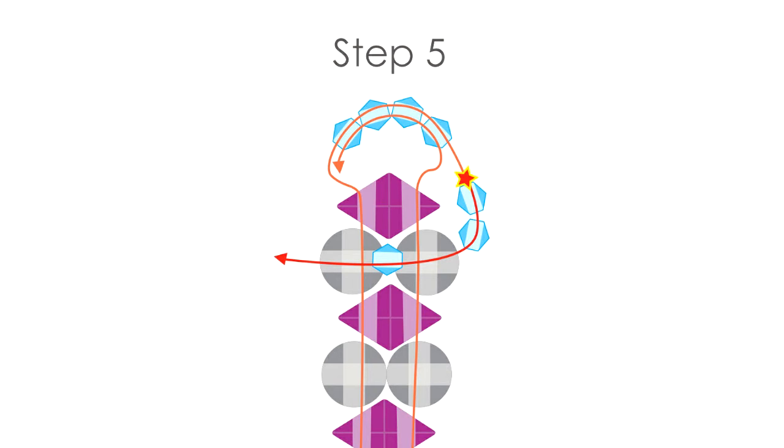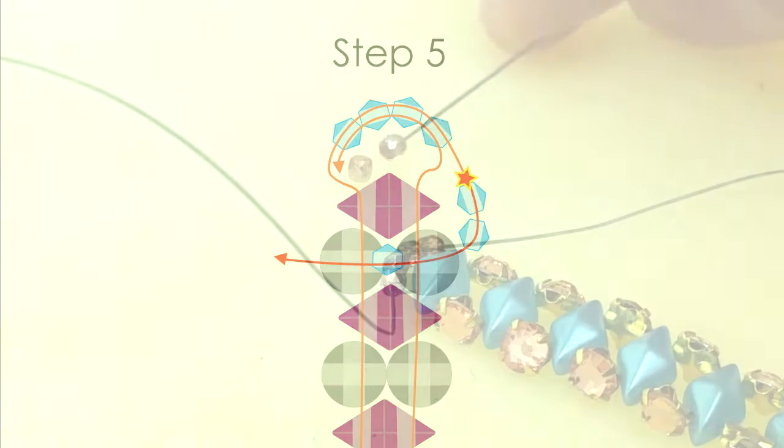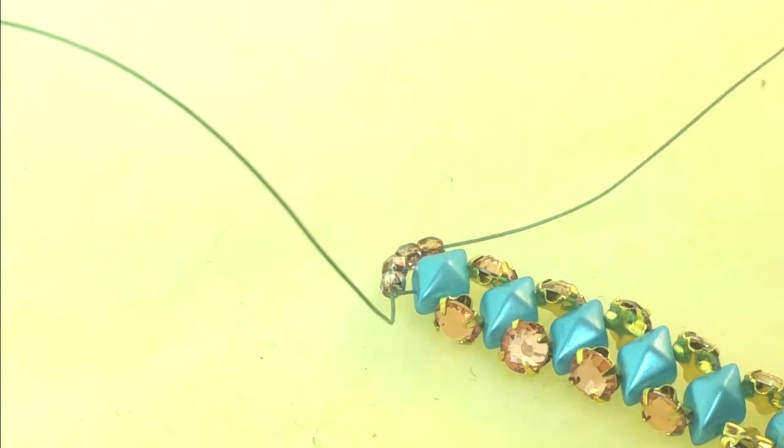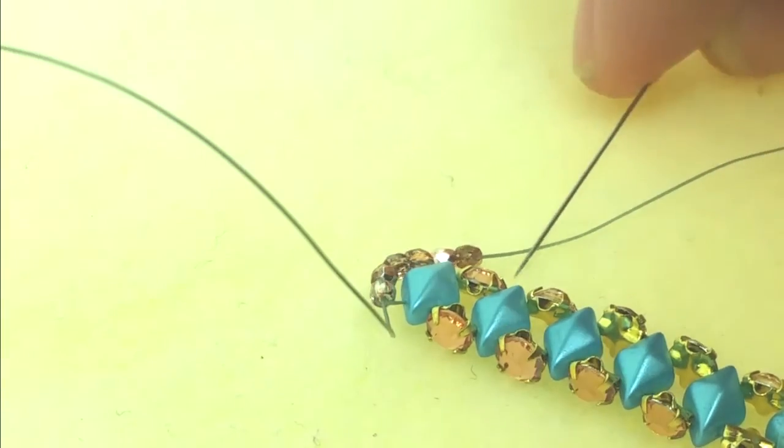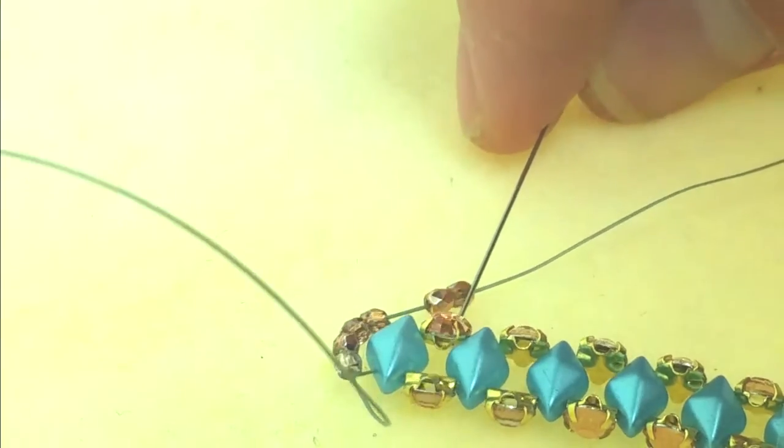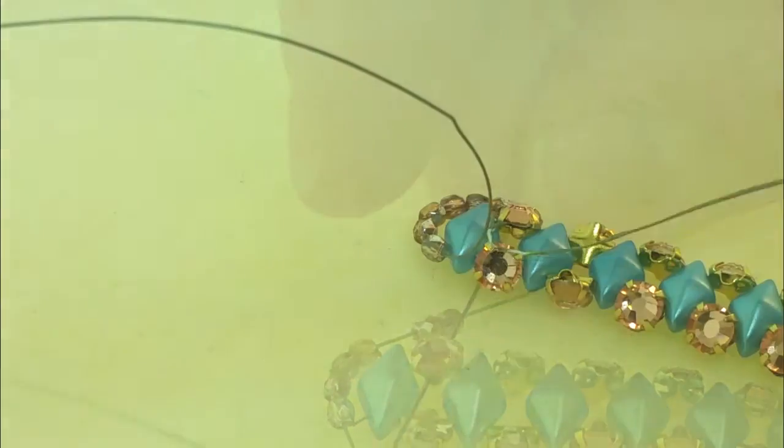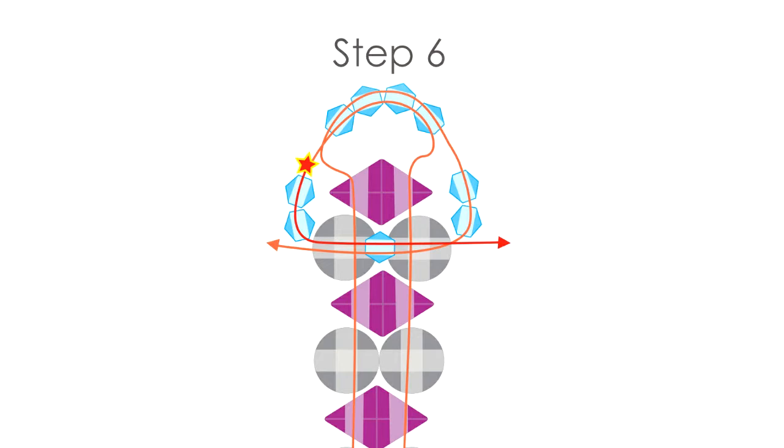Step 5. Thread two additional 2 tiny beads with one length of thread, then enter the adjacent Rosemonte laterally so that the Rosemonte now has two perpendicular threads passing through it. Add another 2 tiny between the Rosemontes and continue laterally through the adjacent Rosemonte to the other side. Pull to tighten.